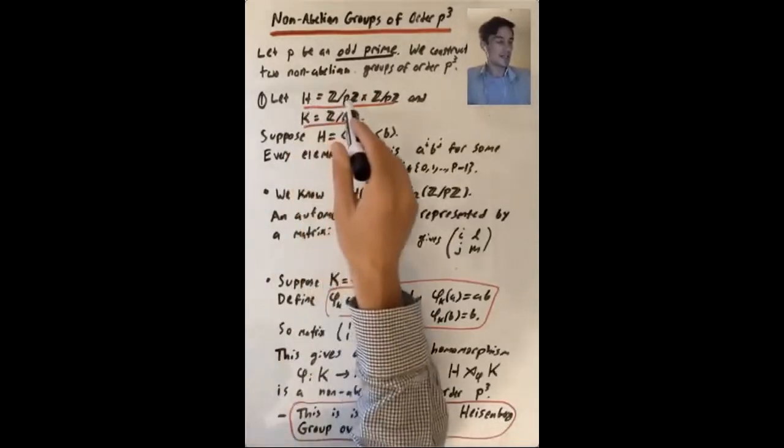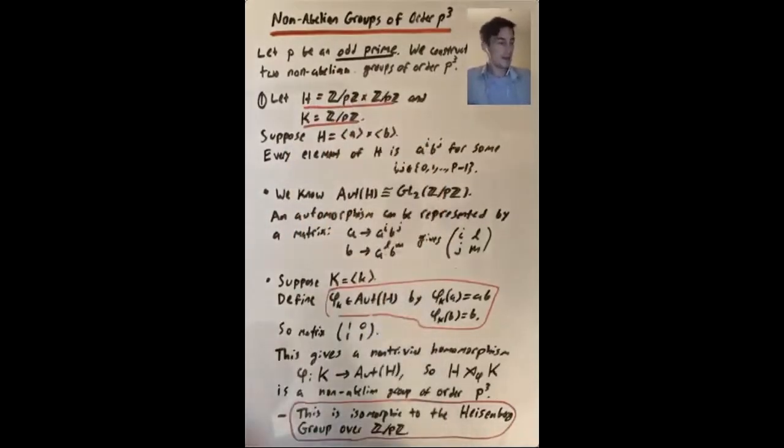Let's say H is Z mod pZ cross Z mod pZ, and K is Z mod pZ. So H is the direct product of two cyclic groups of order p.